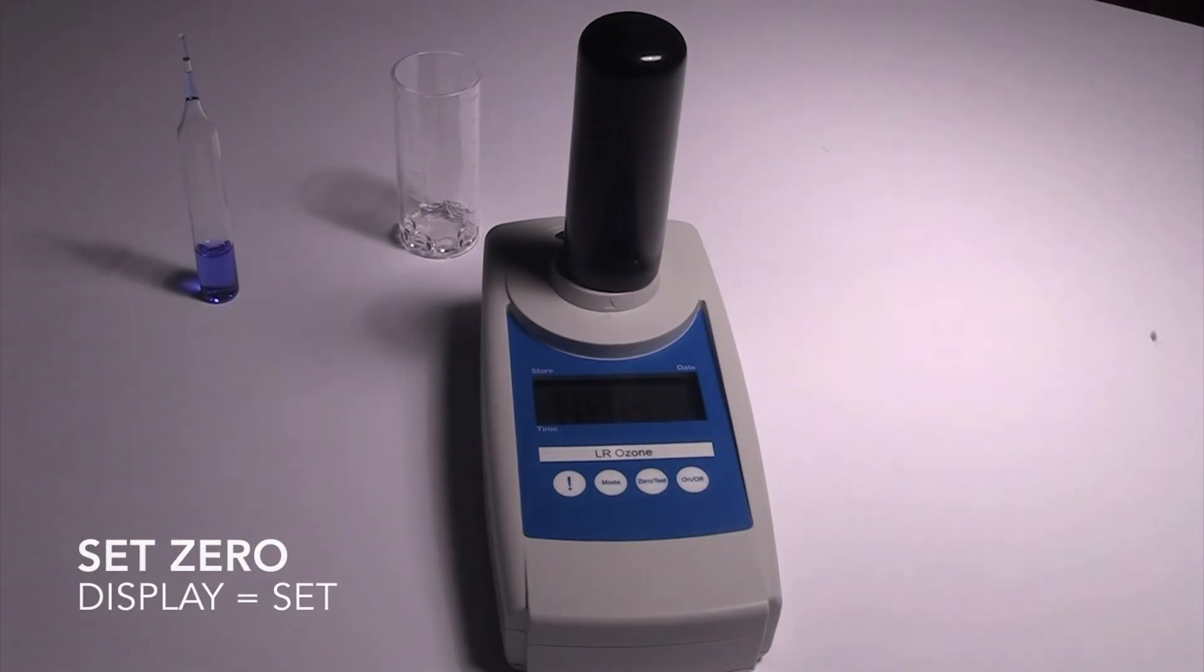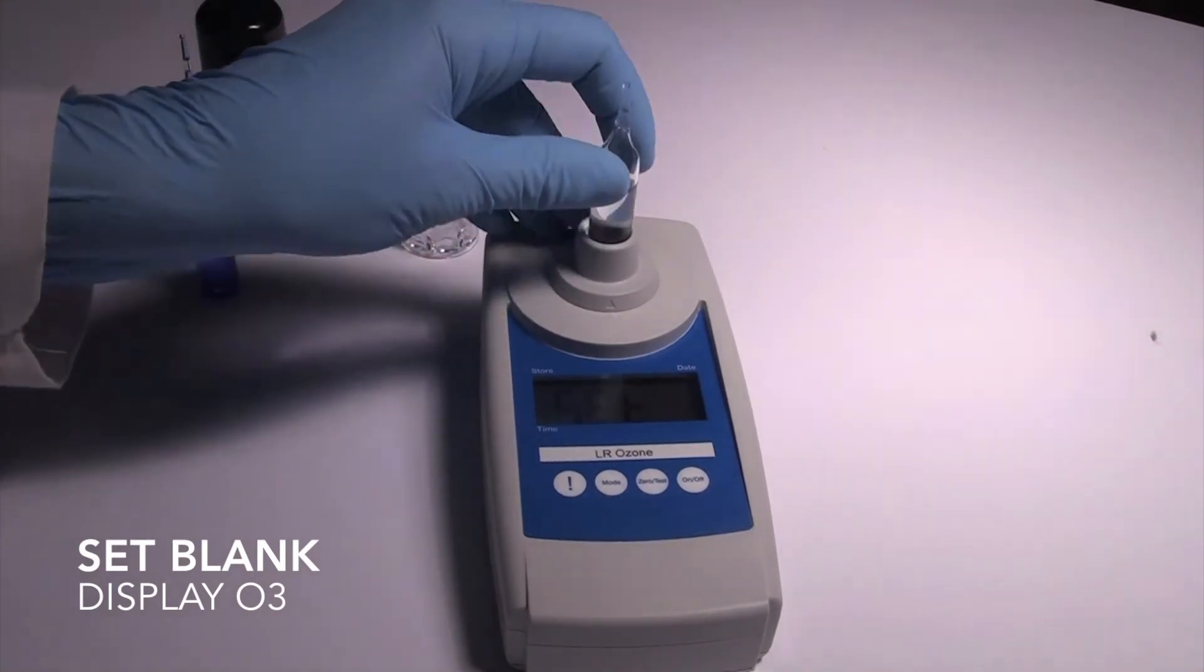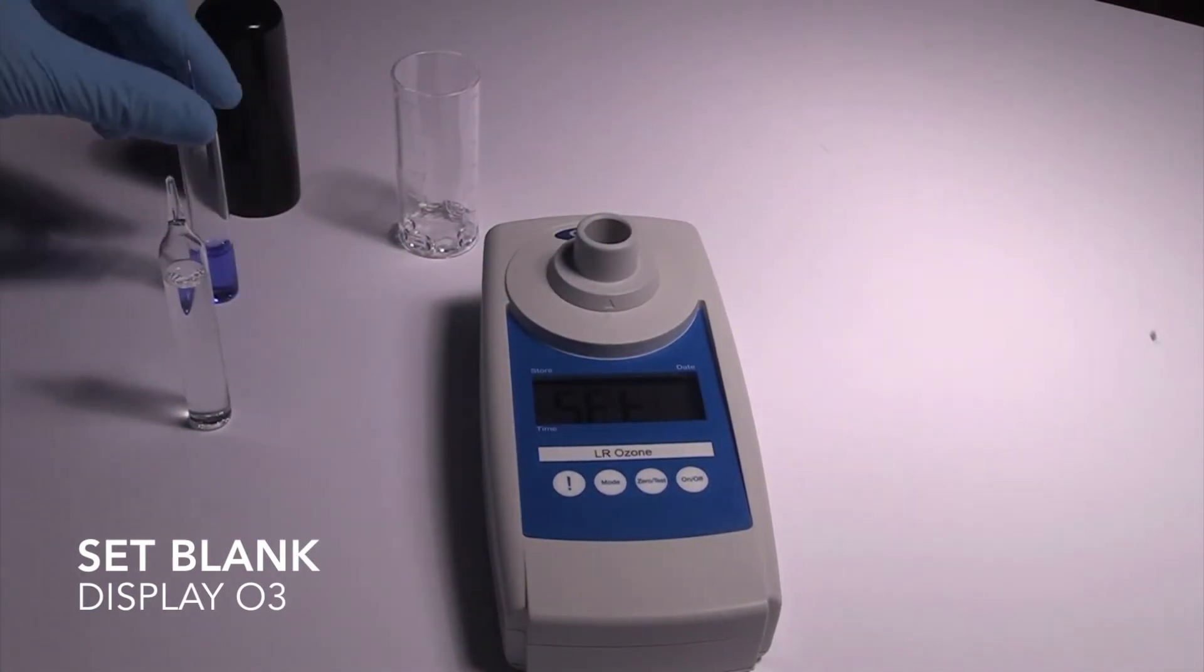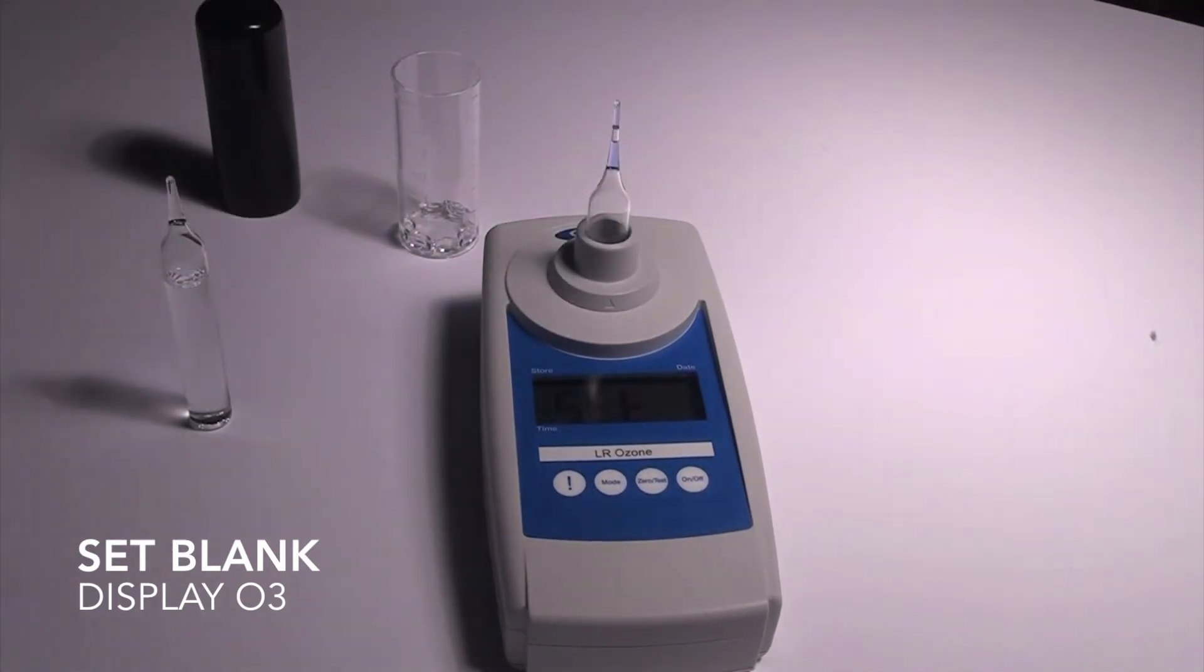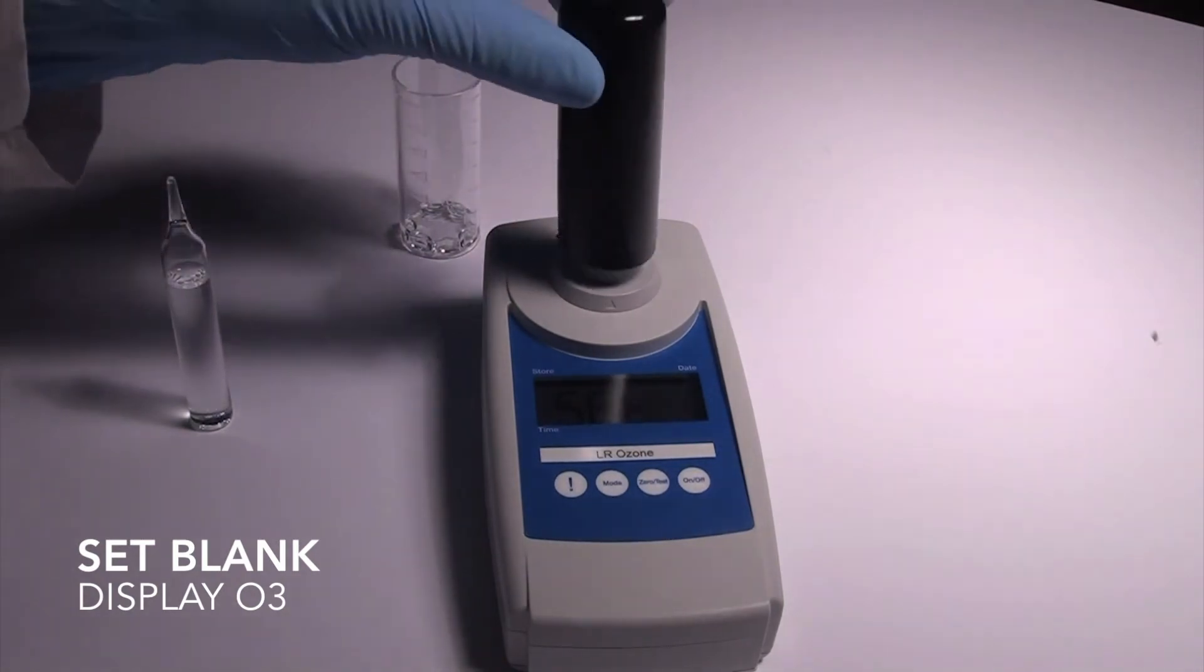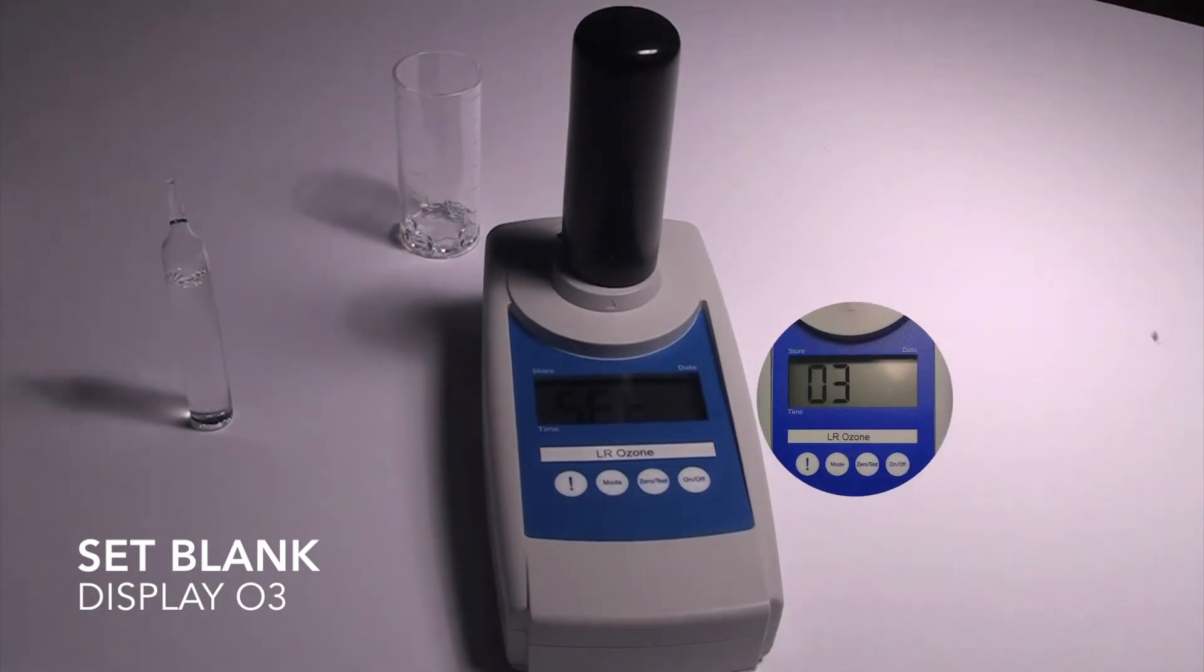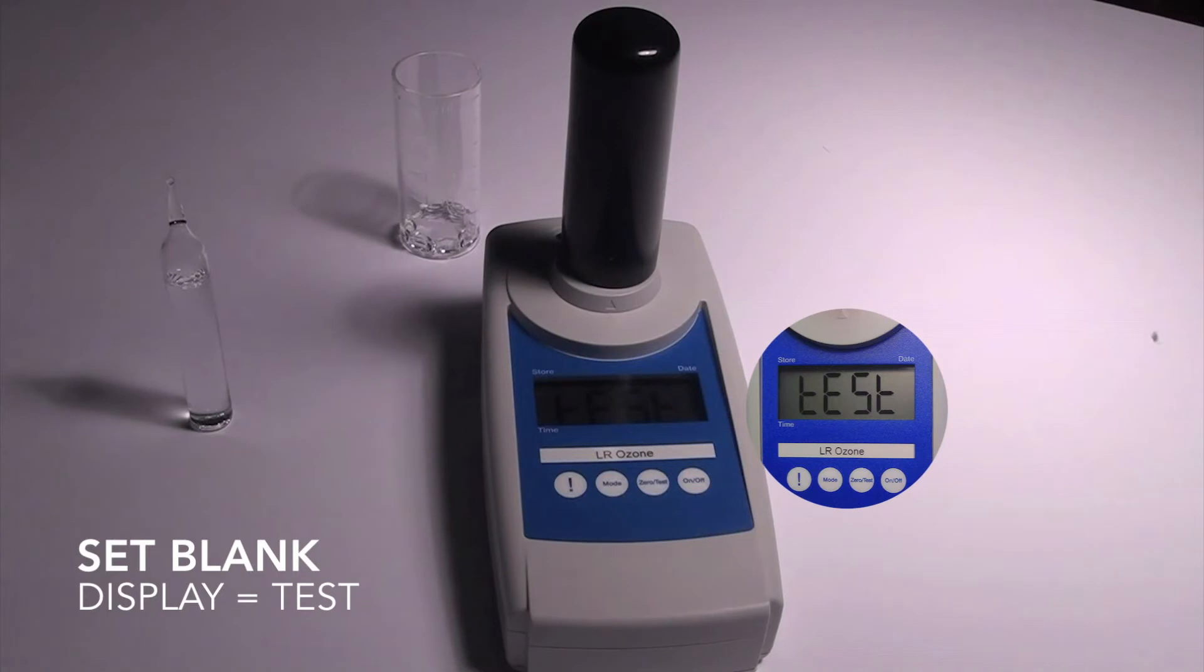Next, generate a reagent blank value. The SAM has now stored a reagent blank value for this ampoule.